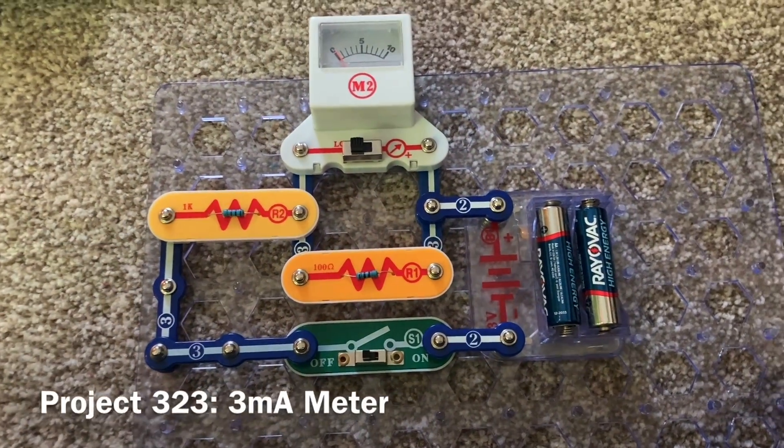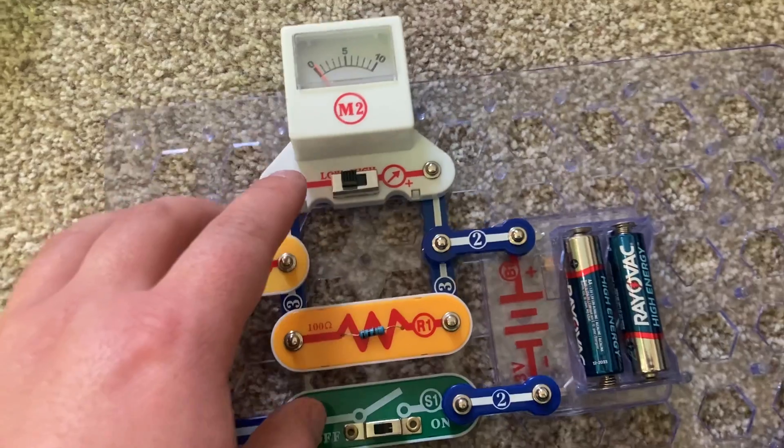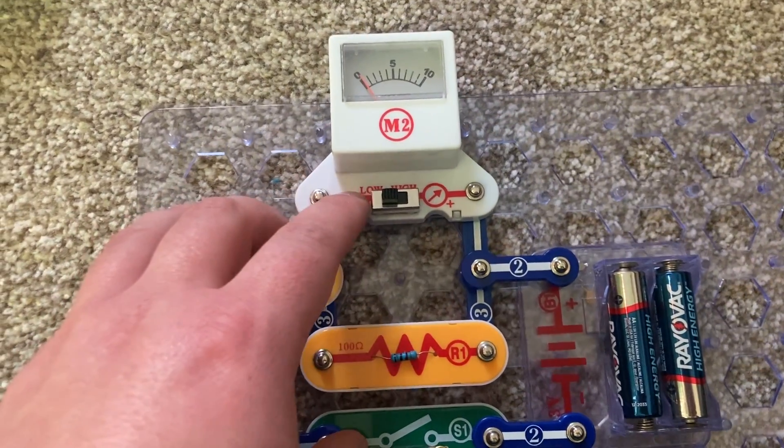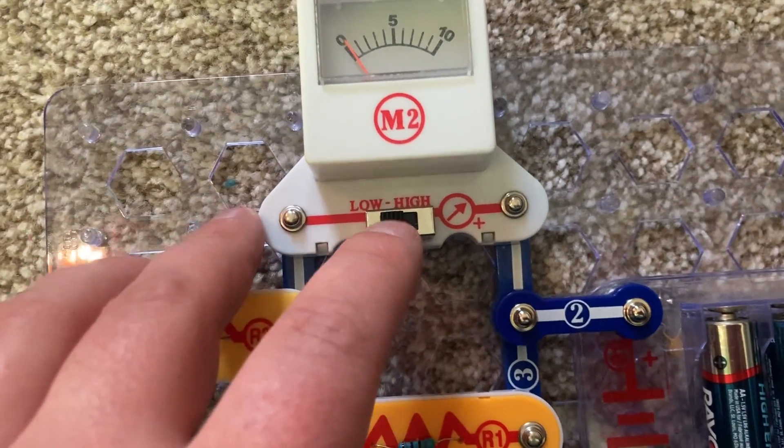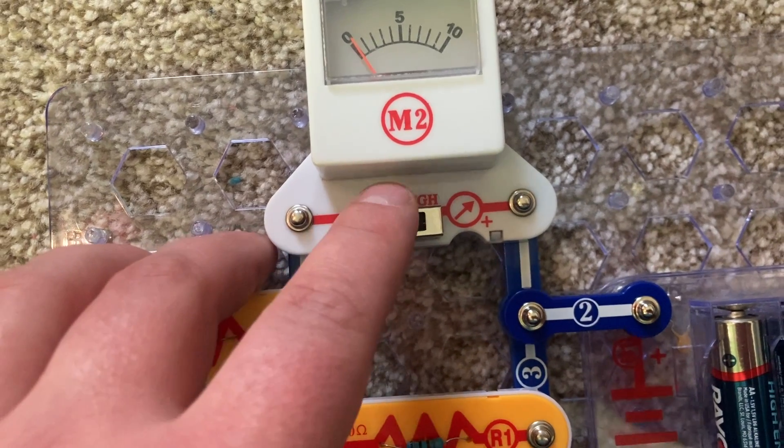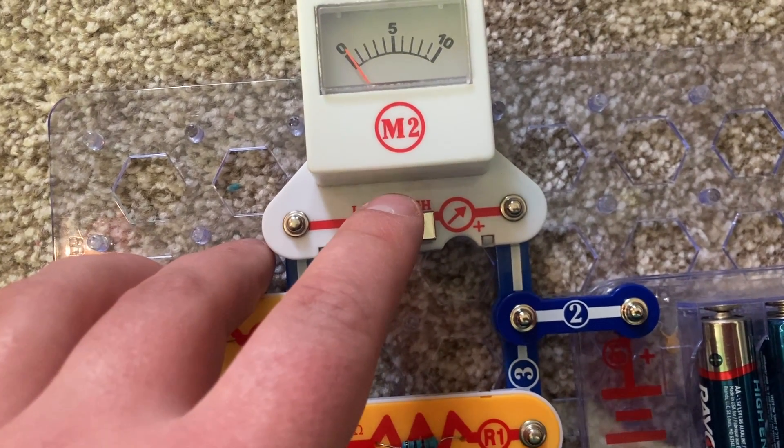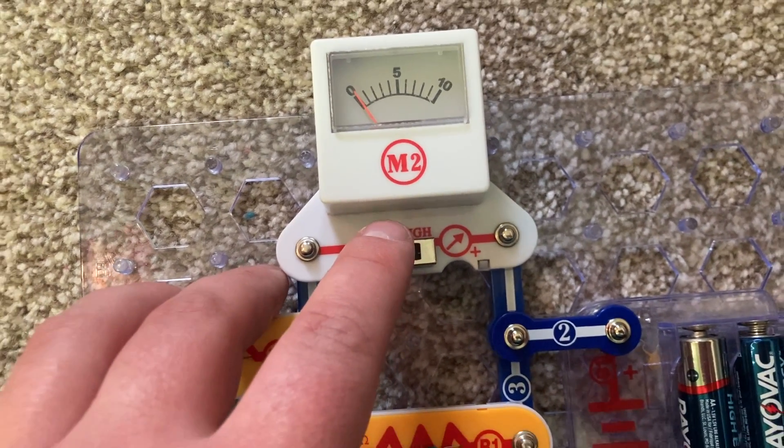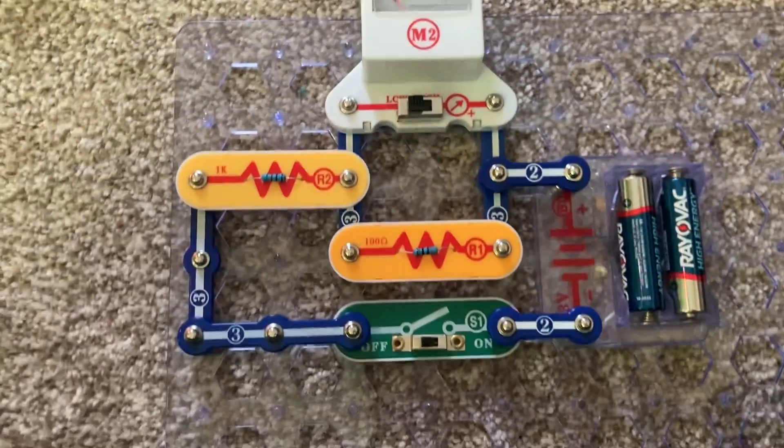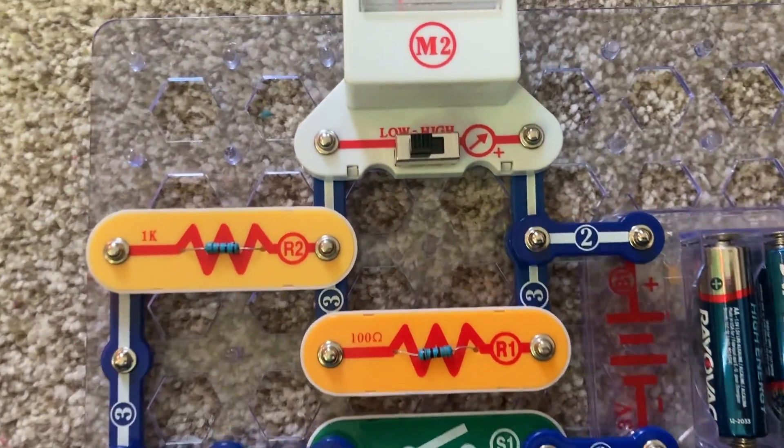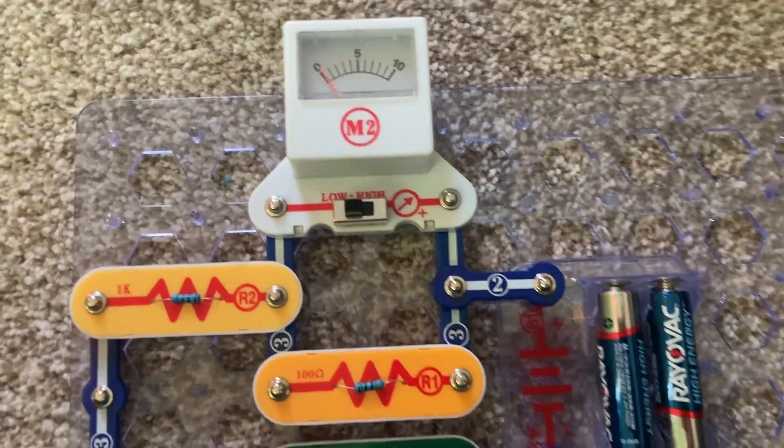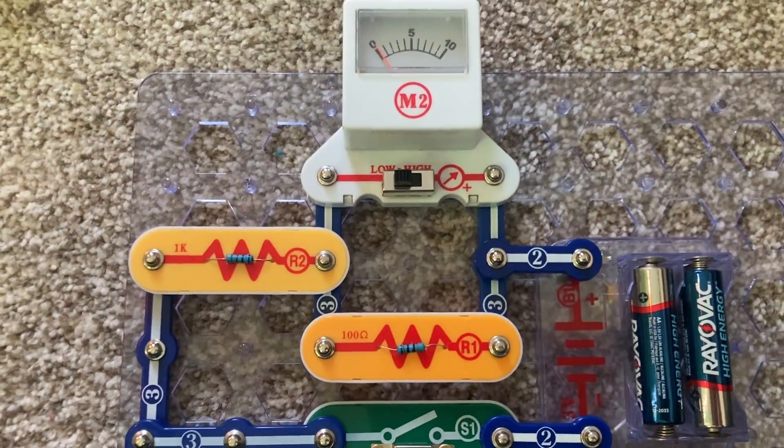This is the first project to use the voltage meter or M2. It is set right now to the low setting or 10 milliamp setting. And on its own, it can measure up to 300 microamps.